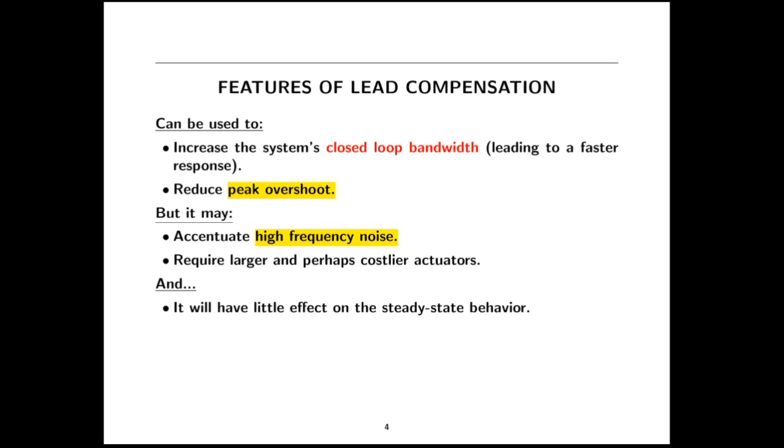So here's a few features of the lead compensator. It can be used to increase the system's closed loop bandwidth, leading to faster response. It can be used to reduce the peak overshoot and certainly to satisfy phase margin requirements. But it may accentuate high frequency noise, and it can also result in the need for larger actuators. And it'll also have very little effect on steady state error behavior, except for how you manipulate capital KC.